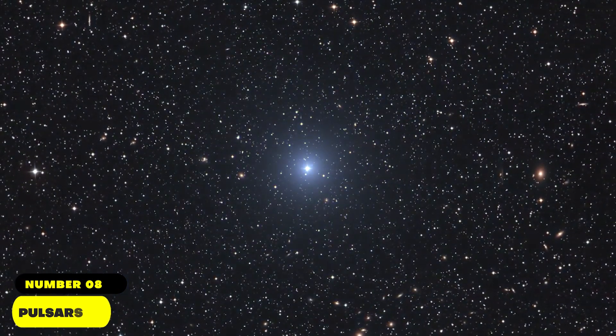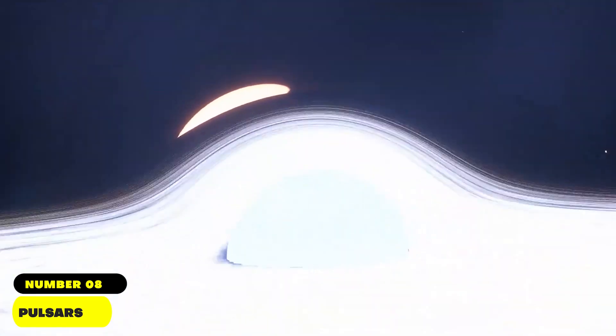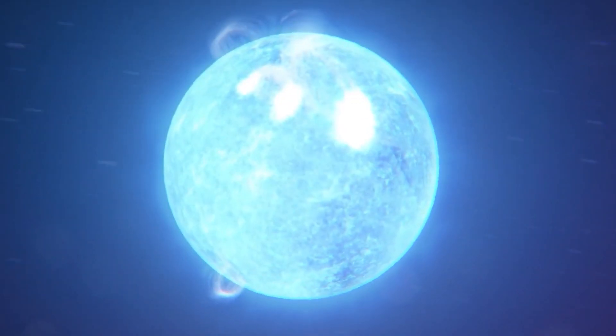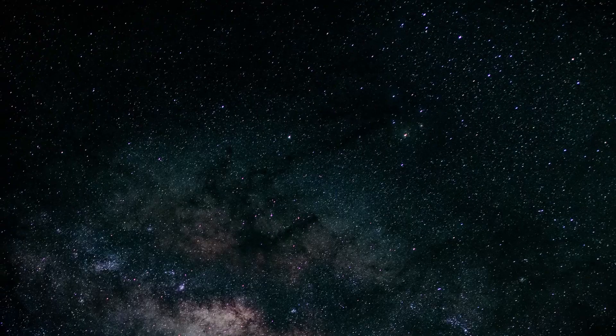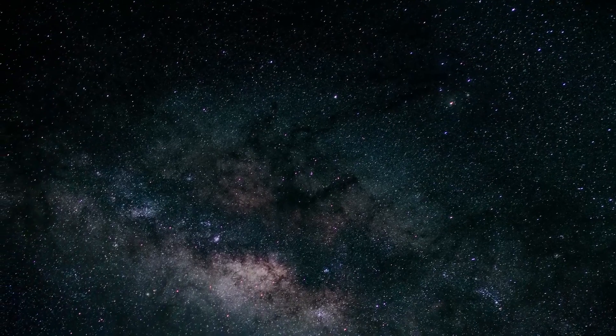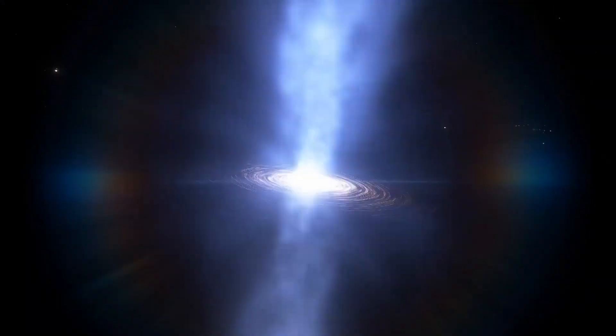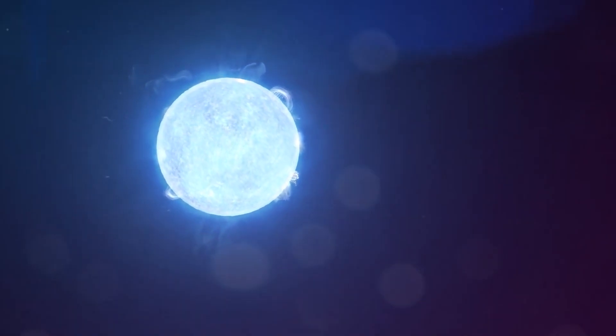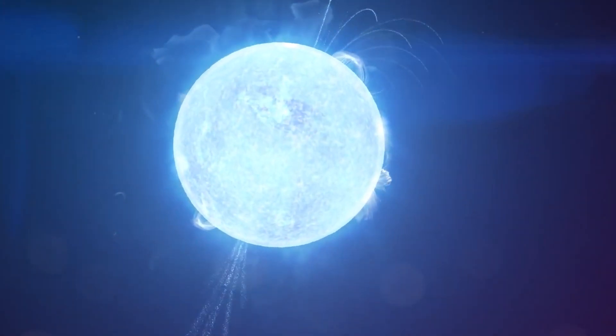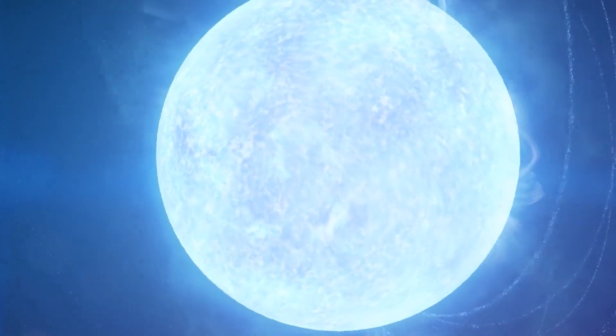Number 8. Pulsars. As mysterious lights in the sky, pulsars confound even the most seasoned astronomers. These stellar wonders, which are born from the catastrophic explosions of enormous stars, take the form of swiftly spinning neutron stars and emit mesmerizing pulses of radiation across the sky. An incredible sight to behold, pulsars shine brightly in the night sky by sending out powerful beams of electromagnetic radiation from their magnetic poles.